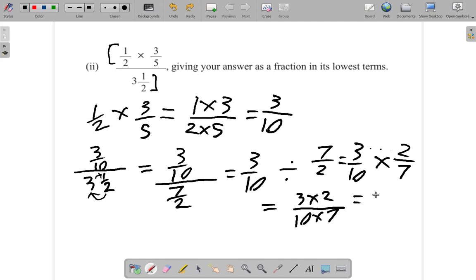Three times two all over ten times seven. So what you have is six over seventy. Now, if you back up here, first of all, two into six is three, and two into seventy is thirty-five.